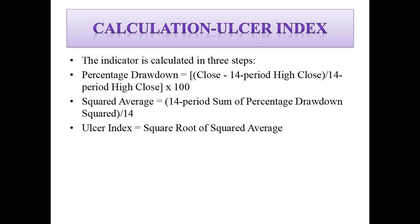As we can see here, the formula is: closing price minus the 14-period high close, divided by the 14-period high close, and the whole multiplied by 100. This will give you the percentage drawdown.